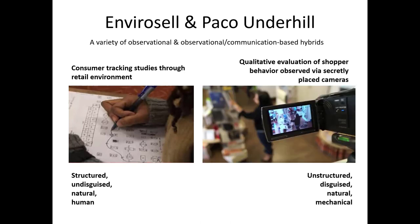Another example from Envirocell is using qualitative evaluation of shopper behavior observed via secretly placed cameras. Envirocell places cameras where individuals are not aware they're being recorded. Hours of videotape are then reviewed and documented by Envirocell employees. In this case, Envirocell may not be engaging in any structured observation — instead, watching for surprising patterns or unexpected behaviors not specified in the research design. Therefore, it's unstructured, disguised (people aren't aware they're being observed), natural in setting, but relying on mechanical observation to document the data.